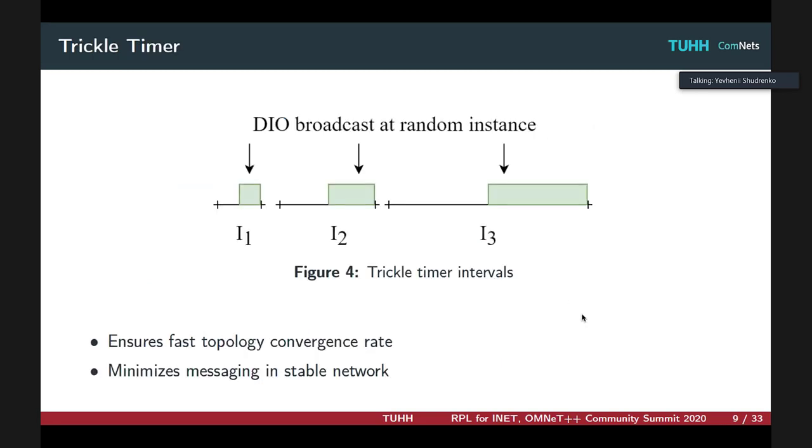The trickle timer module ensures that in stable network, the messaging frequency is reduced by increasing the transmission interval time by a factor of two each time the current interval ends. So if no inconsistencies happen, the intervals keep growing until they reach their max value. This results in control messages being transmitted very rarely in the late stages of the network lifetime.